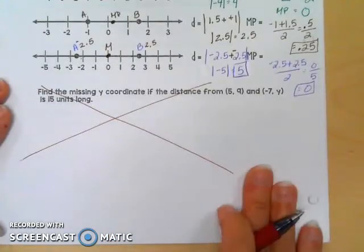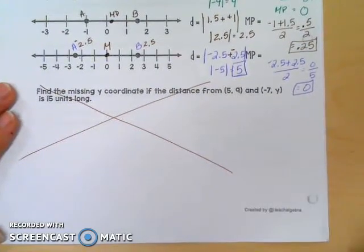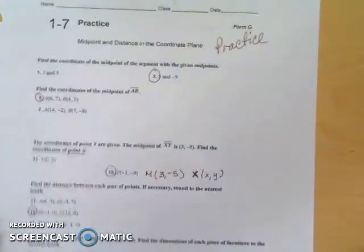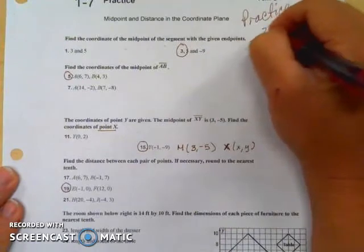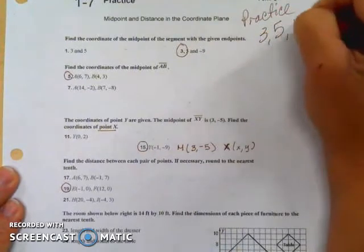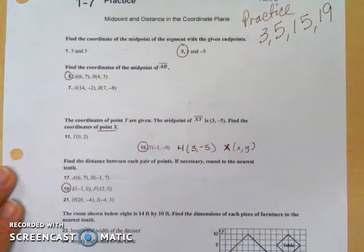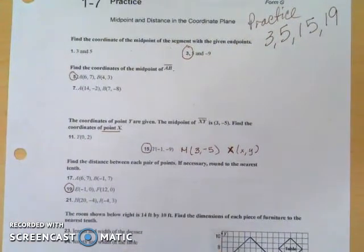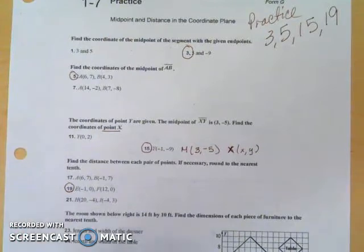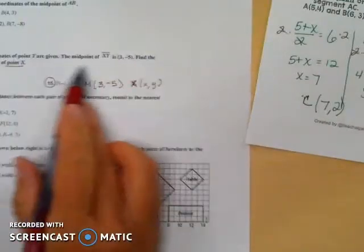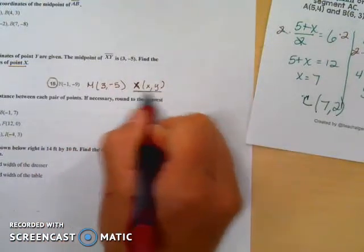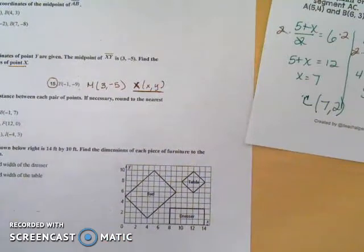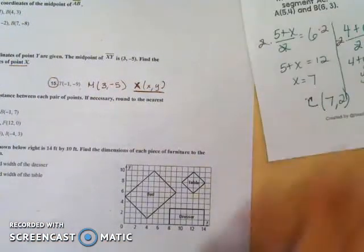This last problem involves more algebra skills than covered at this point, so we're going to skip that one. To practice for section 1.7 before you come to class, do number 3, number 5, number 15, and number 19. Number 15 is like the example we did — they give you one endpoint and the midpoint, and you need to find the other endpoint, which in this case will be point X. You'll have to work backwards with the formula.